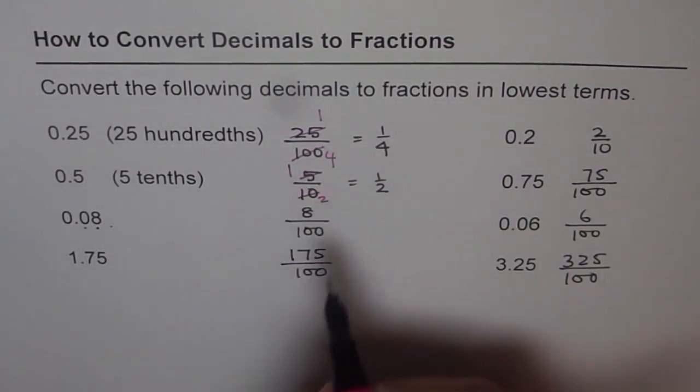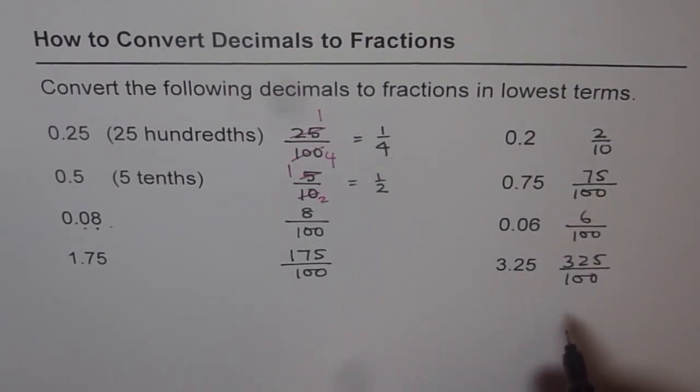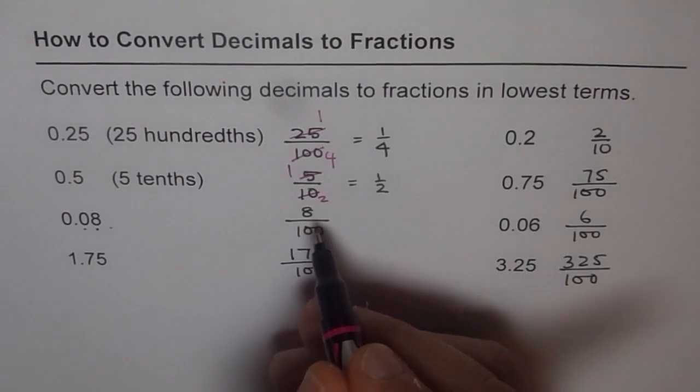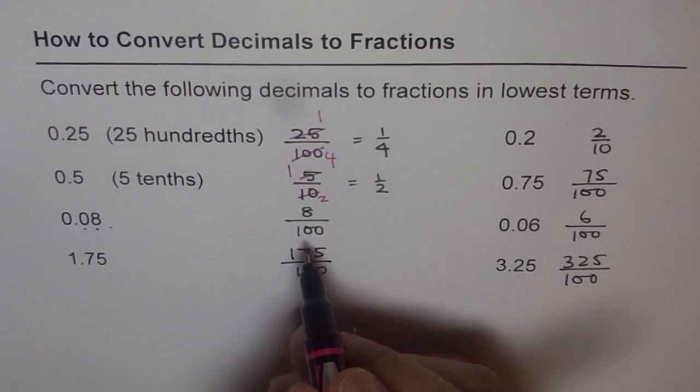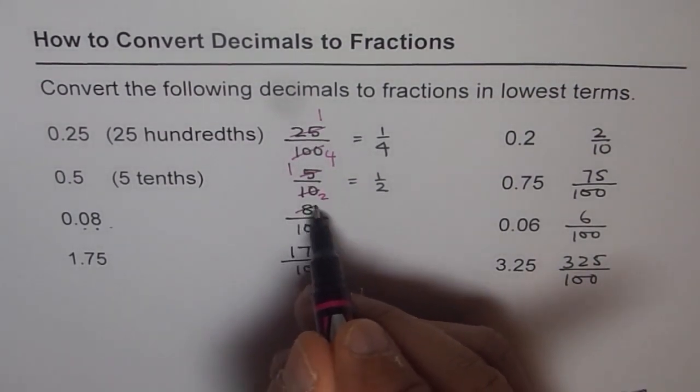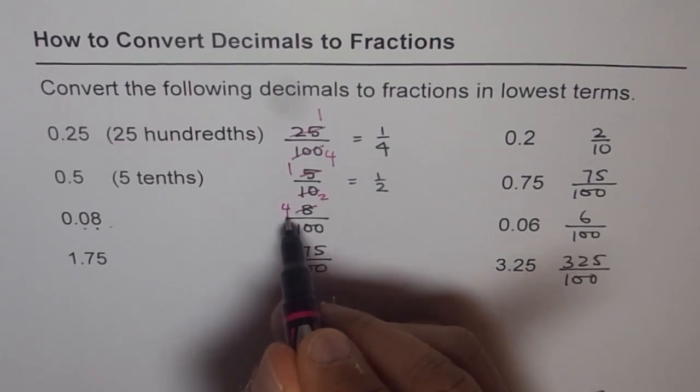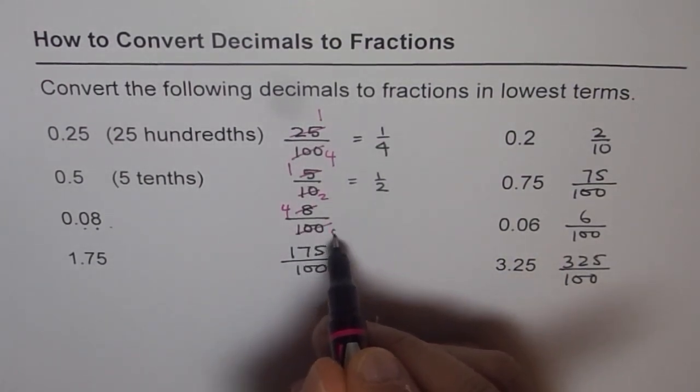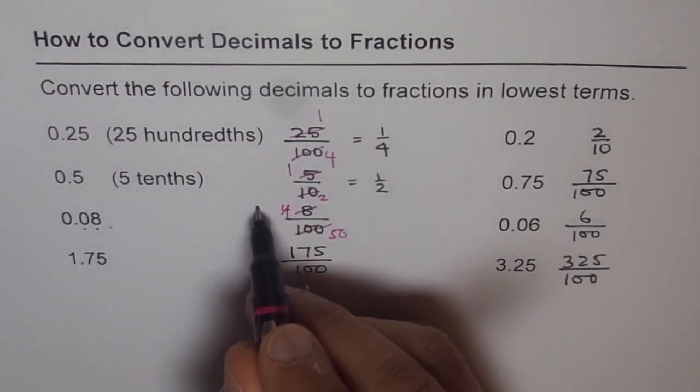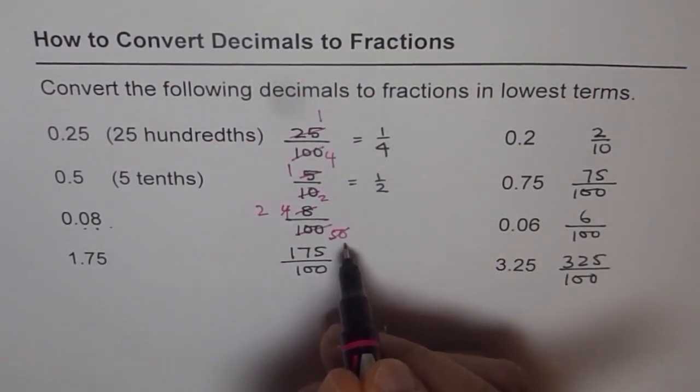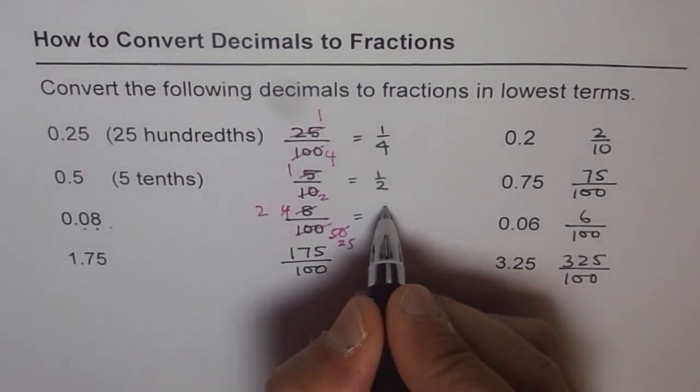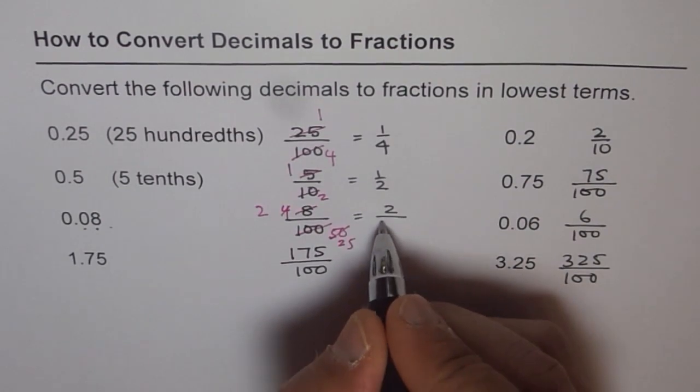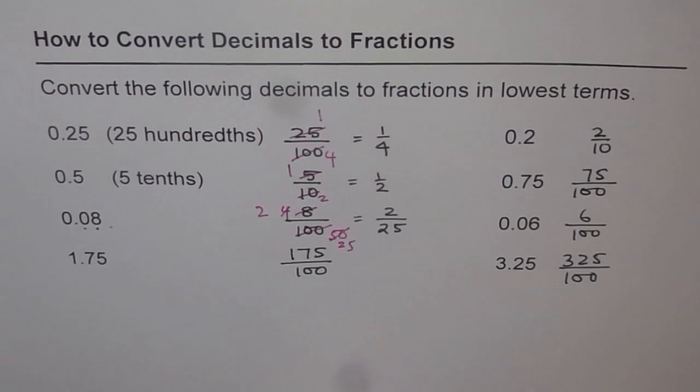Now I will do one more for you. Rest you can simplify and write down your answers. So here 8 and 100. So what is common between them? You could divide twice by 2. So 2 times 4 is 8, and 2 goes 50 times, half of 100. And then again 2 times 2 is 4, and 2 times 25. So we get 2 over 25. So that is the lowest term for 0.08.